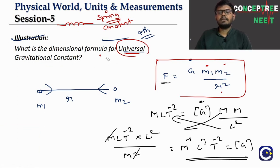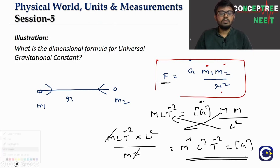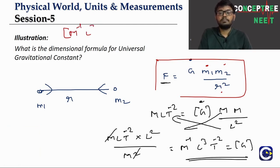We have applied the dimensional analysis principle: LHS and RHS must have the same dimensions. From this, the dimensional formula for the universal gravitational constant G is M⁻¹ L³ T⁻². This is an important result.